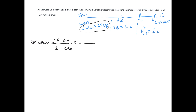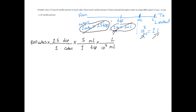Now we go to our next conversion factor. We know that teaspoons is on the top, and that means teaspoons must be on the bottom of our next conversion factor in order for it to cancel out. The next one with teaspoons in it gives us one teaspoon on the bottom and five milliliters on the top. That one's now used up. Now we're left with milliliters needing to go on the bottom to cancel out, and liters going on top — which is the unit we want to end up with. Ten to the third goes on the bottom, and one goes on the top. We now make sure everything cancels out properly.